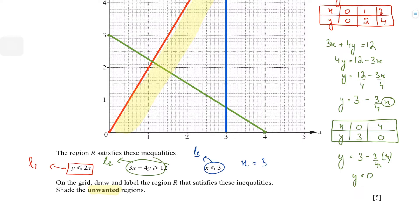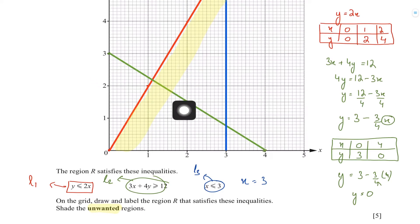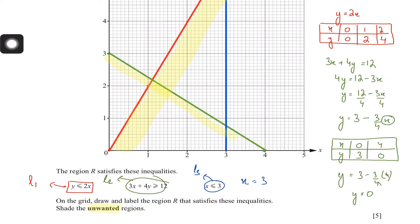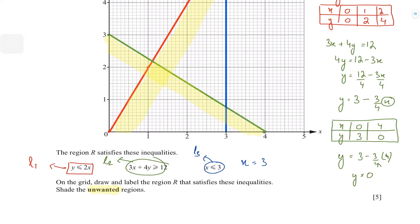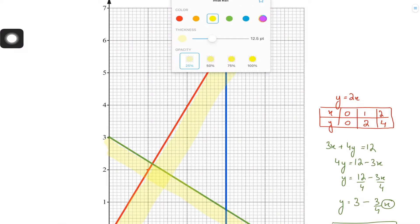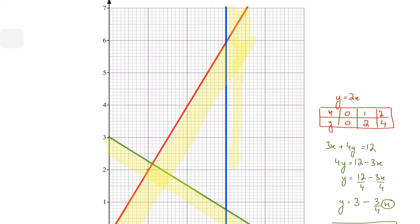Next, 3x + 4y ≥ 12. Before deciding which region to shade, confirm that y is positive — which it is — and the sign is 'greater than or equal to', so the wanted region is above this line. Therefore, the unwanted region is below the line, and that's what we shade. For line three, x ≤ 3: 'less than 3' means the wanted region is to the left, so we shade the unwanted region to the right.